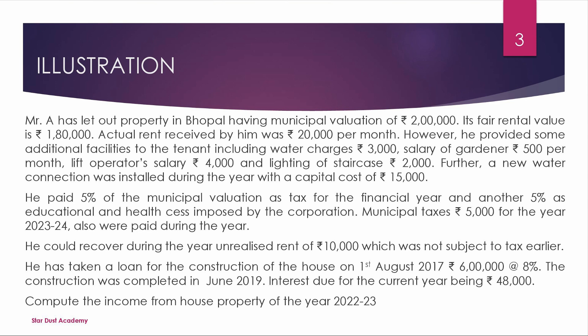What year is the municipal tax paid? He could not recover unrealized rent of 10,000 during the year, which was not subject to tax earlier. He has taken a loan for the construction of the house on 1st August 2017 of 6,00,000. The construction was completed in June 2019. Interest due for the current year is 48,000. Compute income from house property for the year 2022-23.